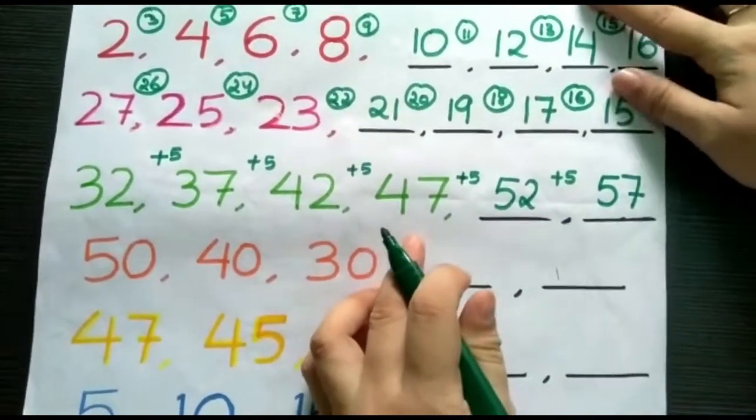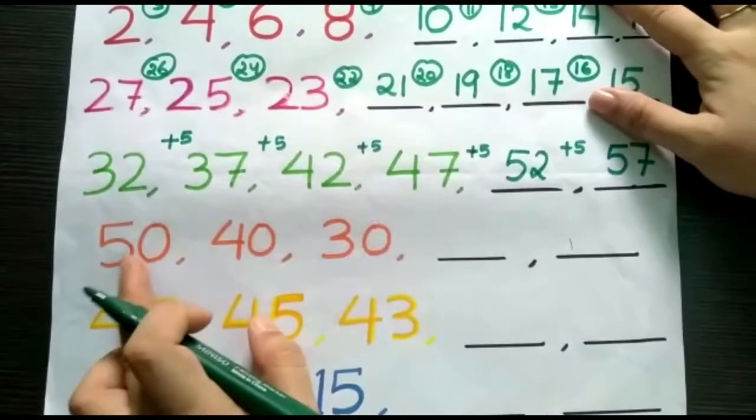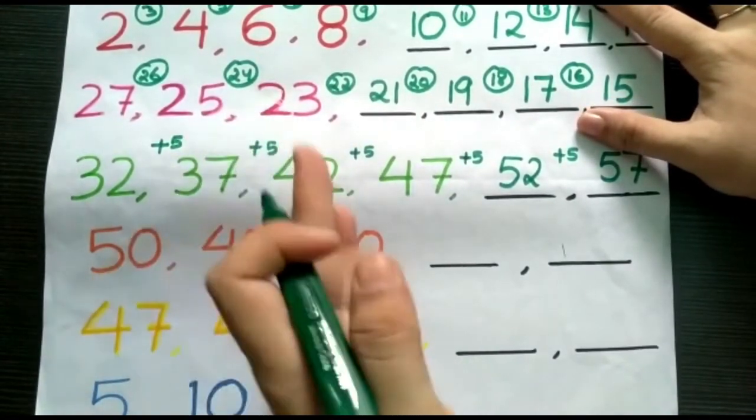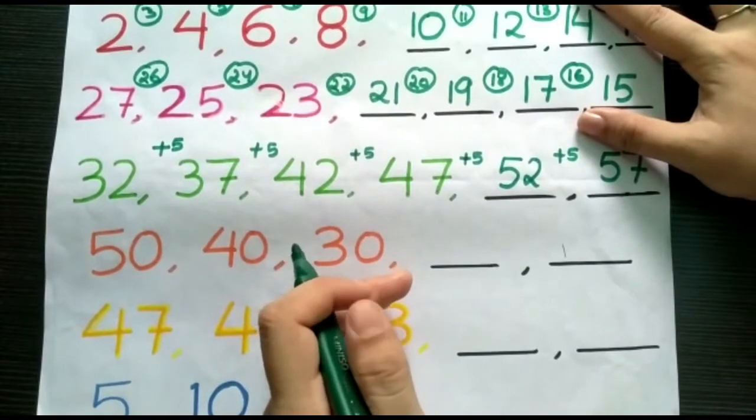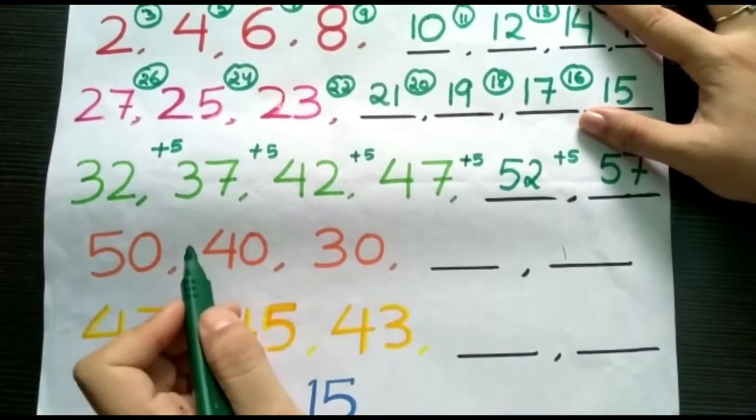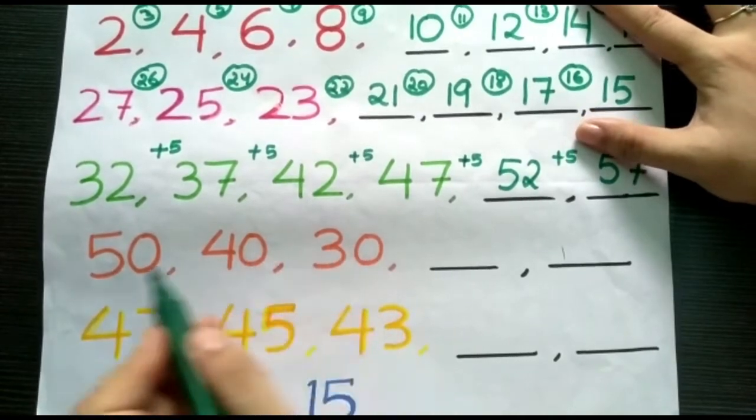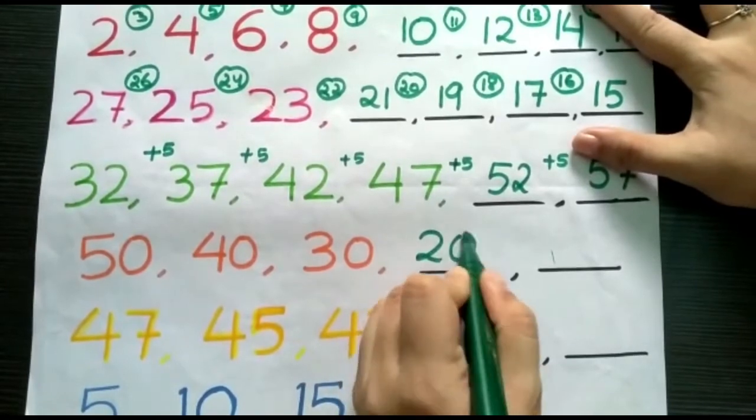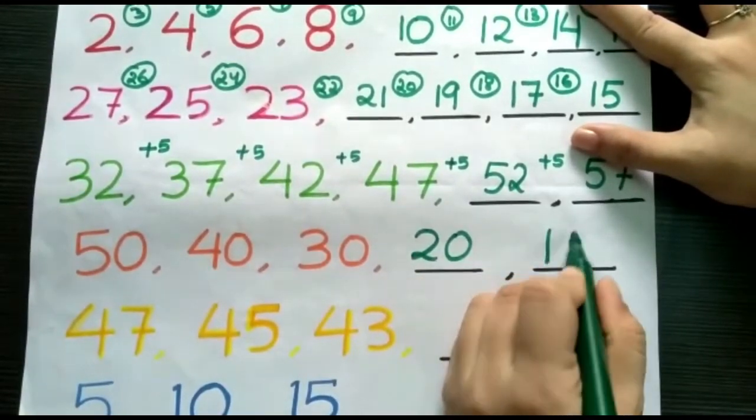Now, next we have 50, 40, 30. This pattern is following backward counting. There is a difference of 10. Children, there is a difference of 10. So, next pattern will be 50, 40, 30. Next pattern will be 20, followed by 10.